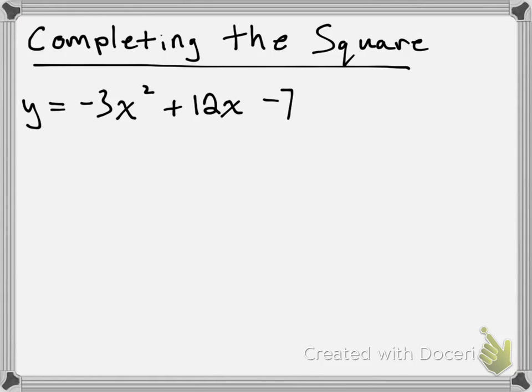So, we have y = -3x² + 12x - 7. This is a quadratic relation in standard form, and we're going to complete the square to get it into vertex form.